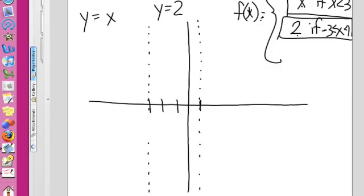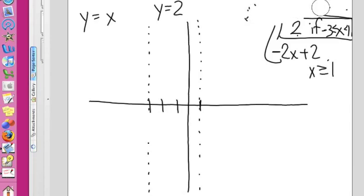F of x equals 2 if x is between negative 3 and 1. And then it says f of x equals negative 2x plus 2 if x is greater than or equal to 1. So when x is greater than or equal to 1, on this side, I have the line f of x, which is the same thing as y, equals this. Now I've got to erase that because I don't have any more room to fit stuff. Y equals negative 2x plus 2.